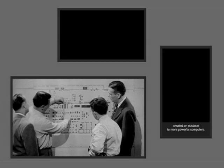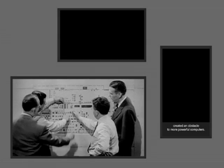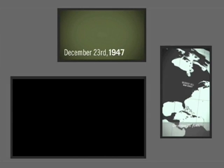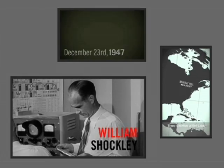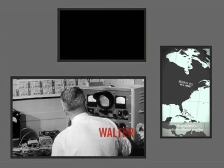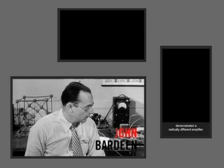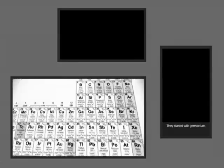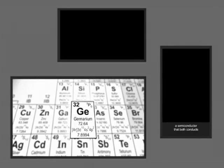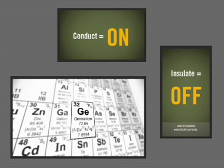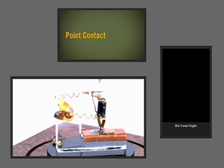December 23rd, 1947. Three scientists at Bell Labs demonstrated a radically different amplifier. They started with germanium, a semiconductor that both conducts and insulates electrical currents. By placing gold wires on germanium to manipulate the current, the first crude transistor was born, but it was fragile and not commercially viable.